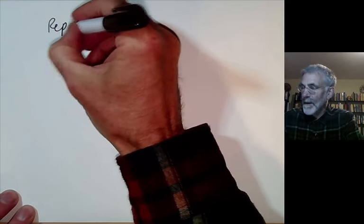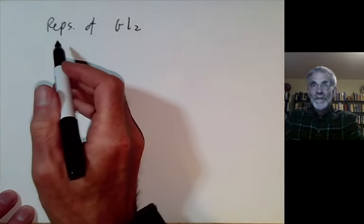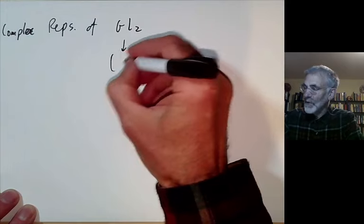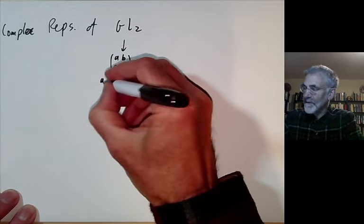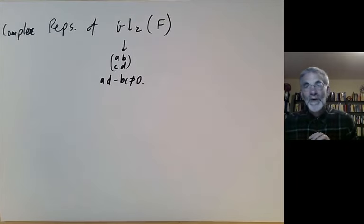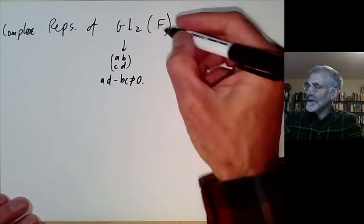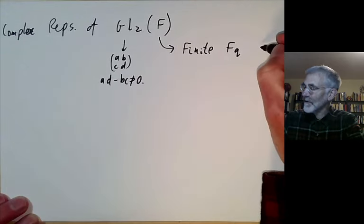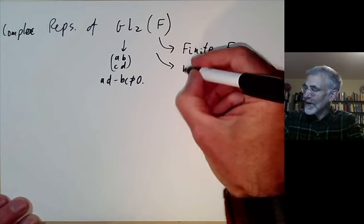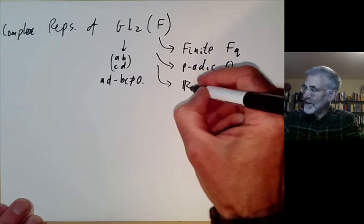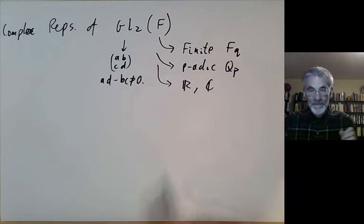This lecture will be a rough survey of some representations of the group GL2. By representations I mean complex representations. GL2 is just the set of two-by-two matrices of determinant non-zero, so they're invertible. GL2 has to be over some field F, and there are some popular choices: F might be a finite field F_q for q a power of some prime, a p-adic field, the real numbers, or the complex numbers.